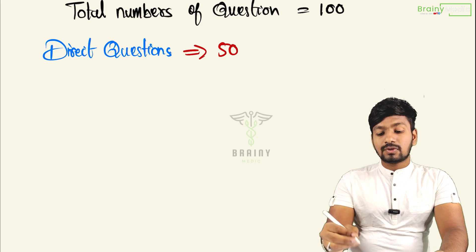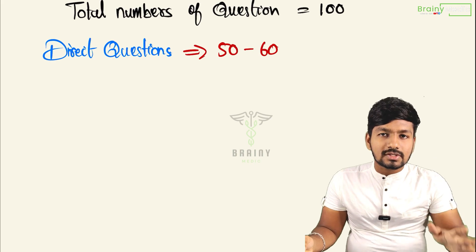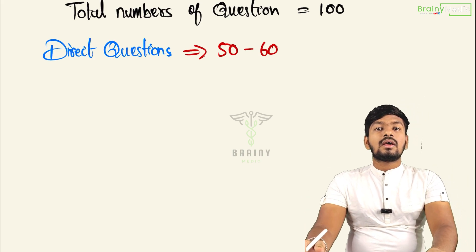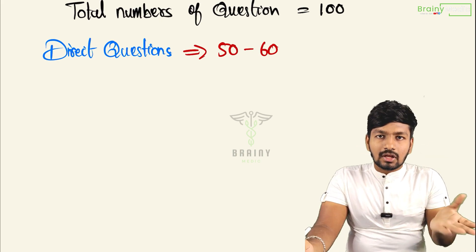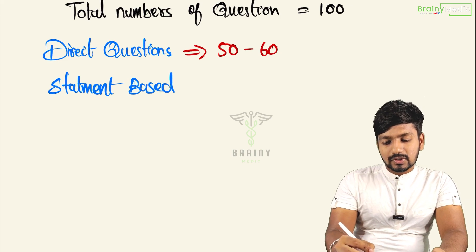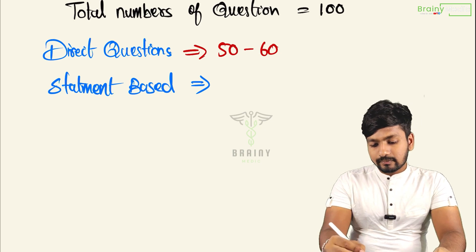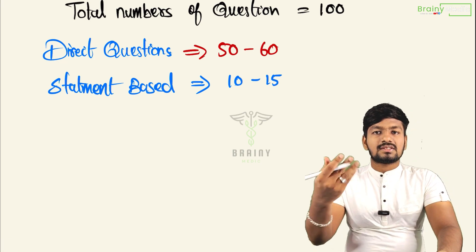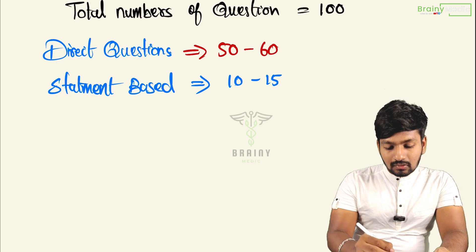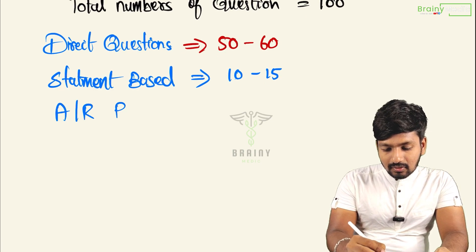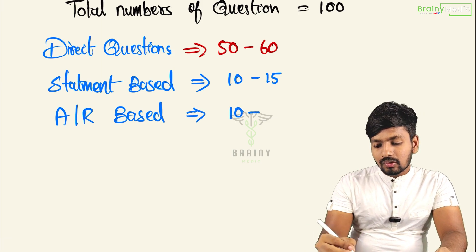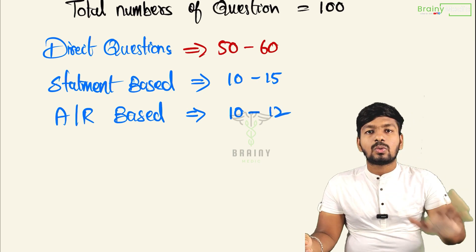If you have 50 questions, you will attempt 50 to 60 questions. If you have 50 direct questions, you have a chance to reach 60. For assertion-reason based questions, there are 10 to 12 chances.